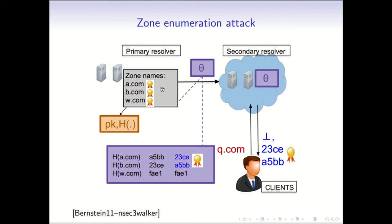This was demonstrated in the NSEC3 walker. We see that the problem comes from the fact that the proofs are actually leaking more information than they should, which is just non-membership in this case.